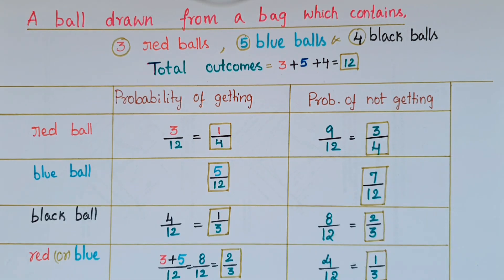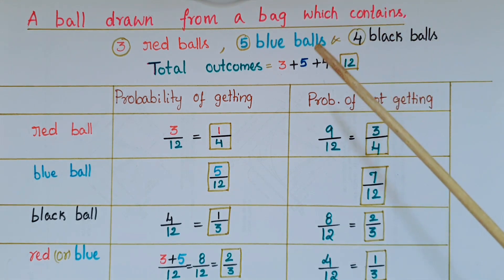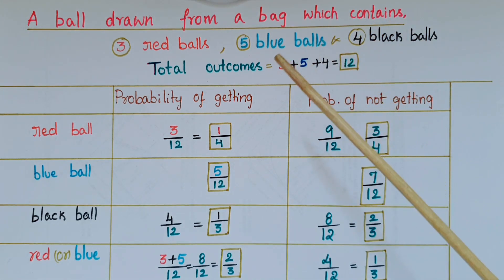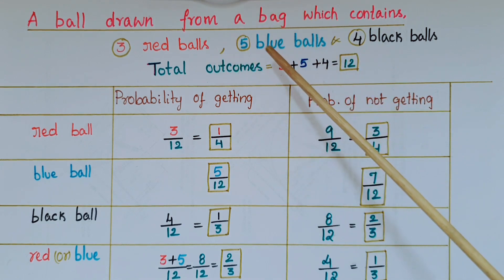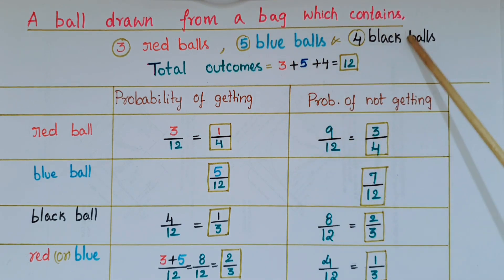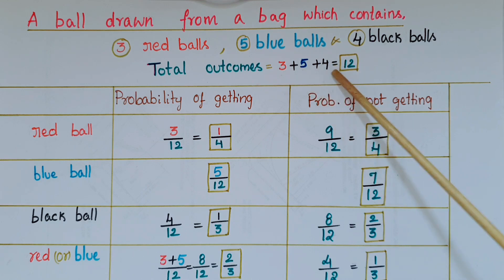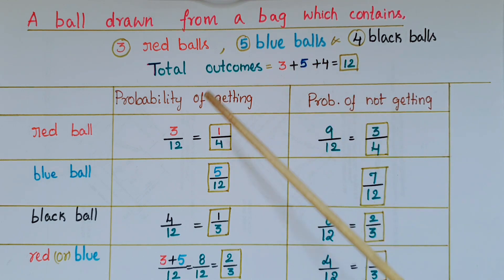Hello everyone, today I am going to discuss problems based on a ball drawn from a bag. The bag contains three red balls, five blue balls, and four black balls. The total outcomes are three plus five plus four, that is 12.